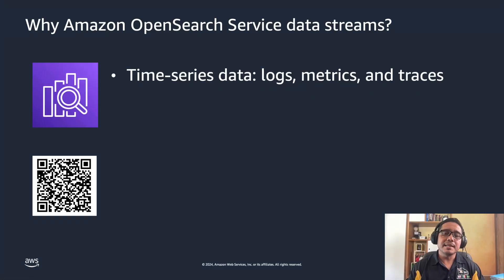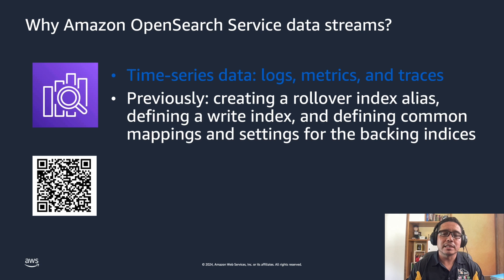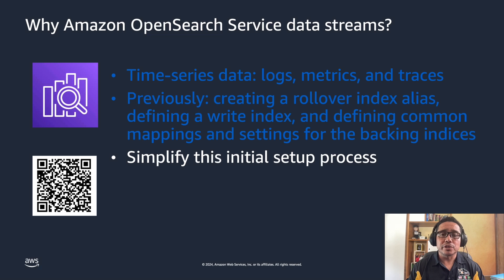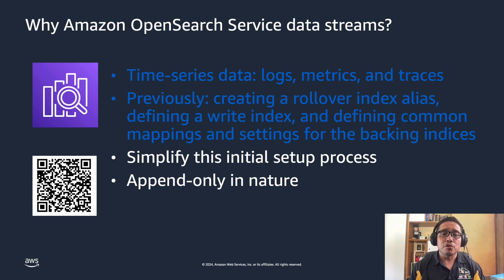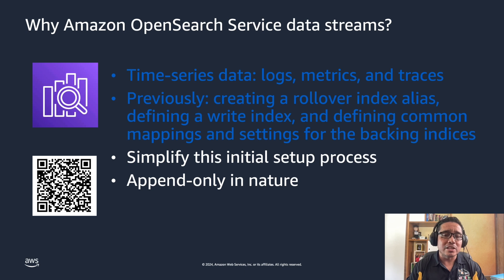Let's start by defining what a data stream is. A data stream is used to store append-only time series data across multiple indices while giving you a single named resource for requests. Data streams are well suited for logs, events, metrics and other continuously generated data. Previously, a typical workflow to manage time series data involved multiple steps such as creating a rollover index alias, defining a write index, and defining common mappings and settings for the backing indices.